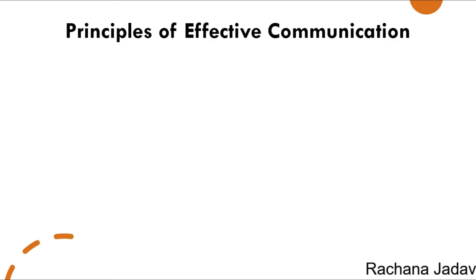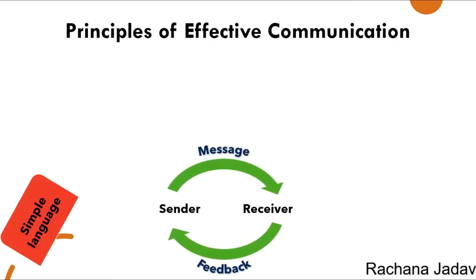Let us see the principles of effective communication. The first principle is simple language. It must be to the point and must not create misunderstanding or confusion. So it must be simple in language, not too complex. It must also be definite — the person should have clarity in their mind about what you want to say.